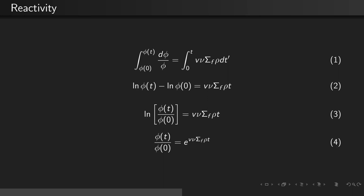Exponentiating both sides, we see that phi of t divided by phi of 0 is equal to e to the v nu sigma f rho t.